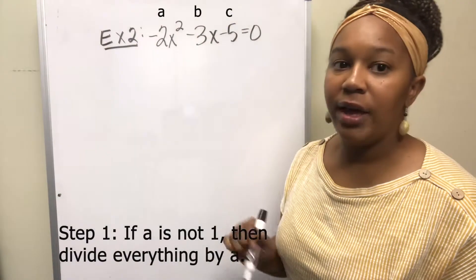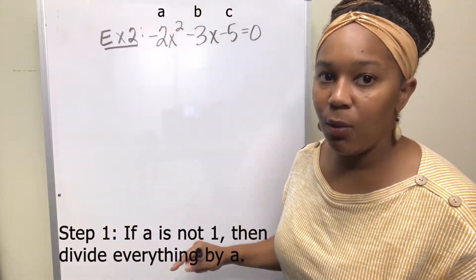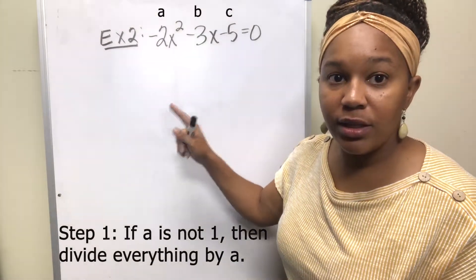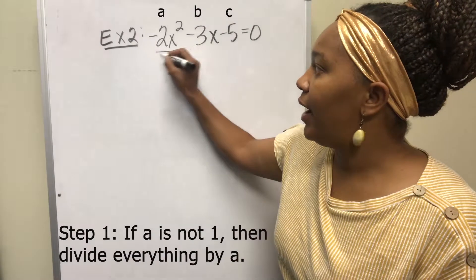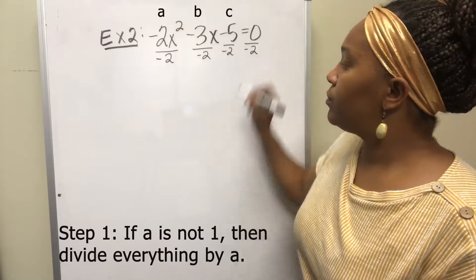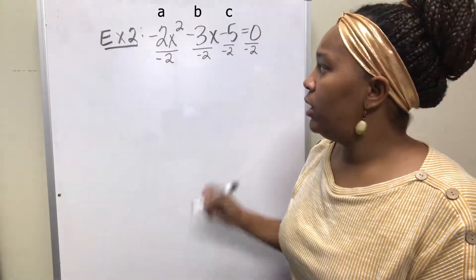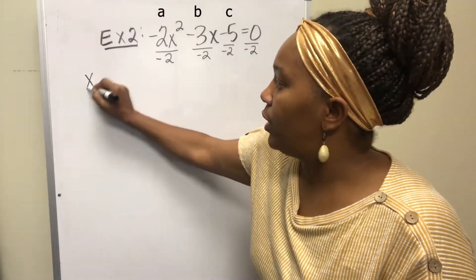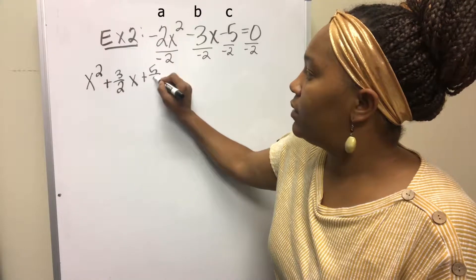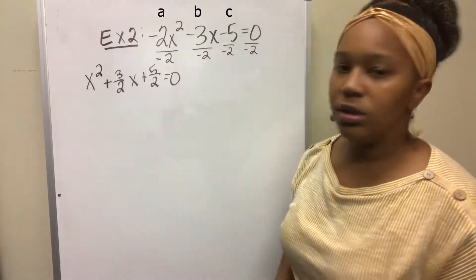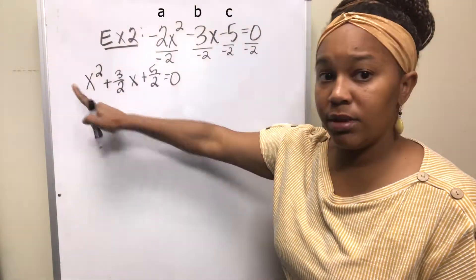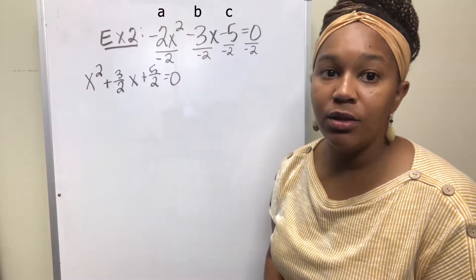Step one: if a is not 1, divide everything by a. In this case, our a is negative 2 — the leading coefficient — so we need to divide everything by negative 2. When we divide everything by negative 2, we get x squared plus 3 halves x plus 5 halves equal to 0. We got rid of the leading coefficient and created a leading coefficient of 1.